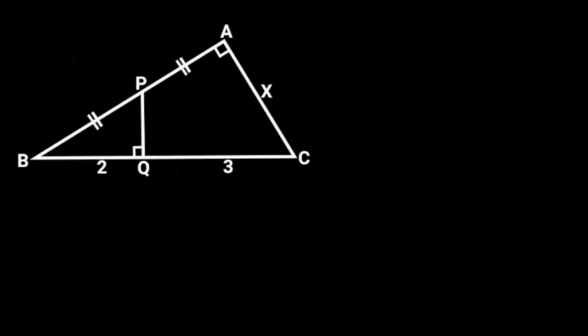This figure is a right triangle ABC. PQ is perpendicular to BC, and BP is equal to AP. If BQ is 2 units, QC is 3 units, find the value of X.